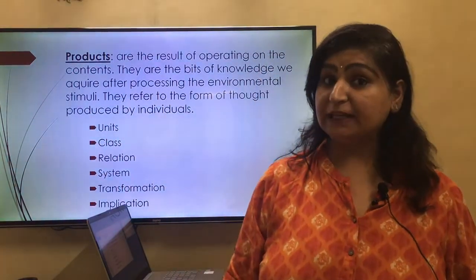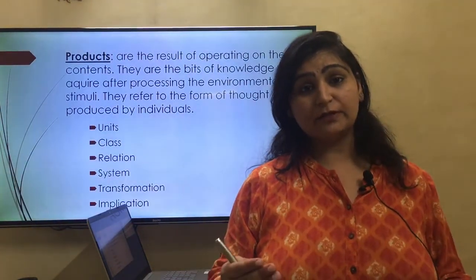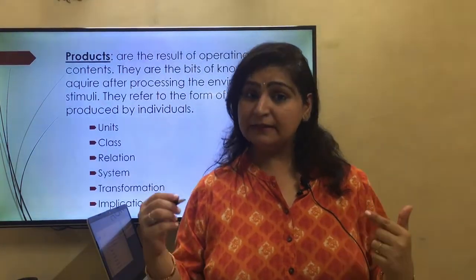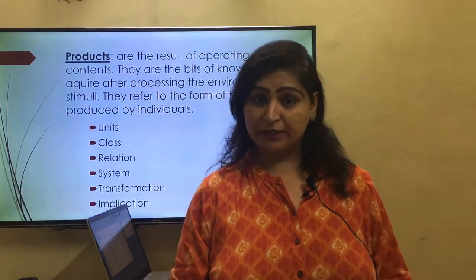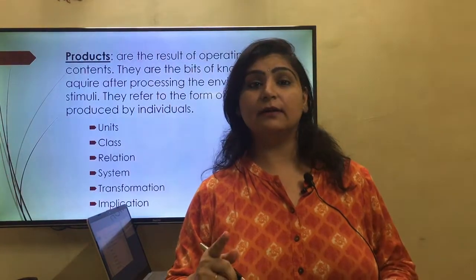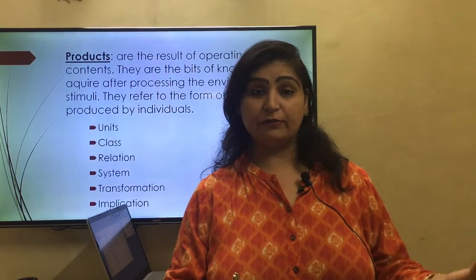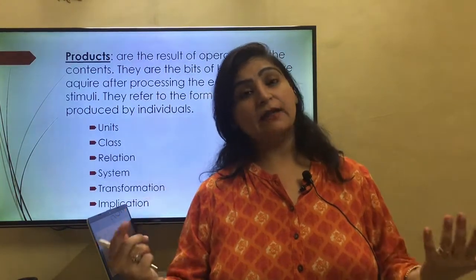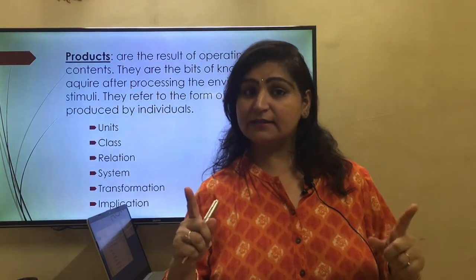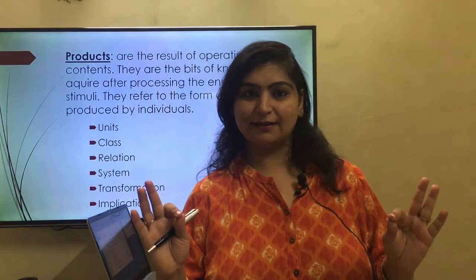So this was Guilford's theory of intelligence. He differs from Spearman and Thurston. He gave us 180 abilities and a structure of intellect — a cubical, three-dimensional model of intelligence — where abilities were organized along three dimensions: operations, contents, and products. Hope you understand. Please study this theory carefully and do well in your studies. Thank you.